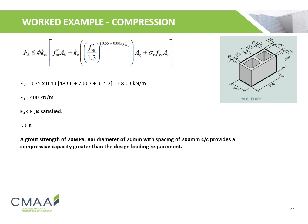Using the reduction factors phi (φ) and K, the overall compressive capacity is calculated to be 483.3 kN per meter. As the design loading of 400 kN per meter is less than the compressive capacity, this criterion is met, and thus the wall is acceptable for use.